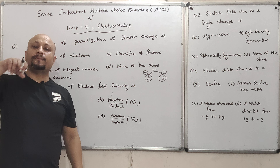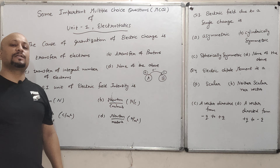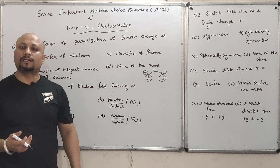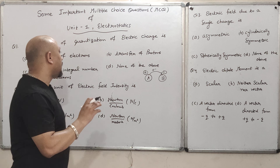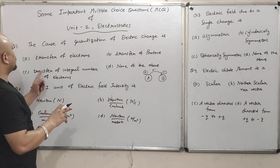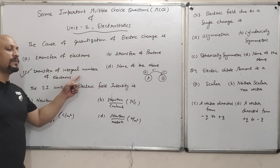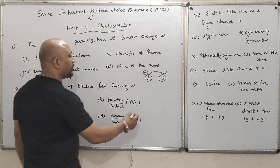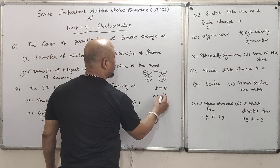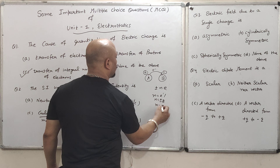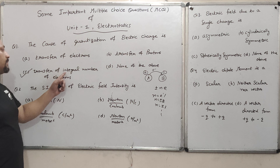Quantization says the charge will be transferred only in integral form — either 2 electrons, or 3 electrons, or 5 electrons. It will never happen that 2/3 electrons or 3/4 electrons transfer. The charge is quantized. The cause of quantization of electric charge is due to the transfer of an integral number of electrons. Electrons do transfer, but in integral form: ±ne, where n = 1, 2, 3, and so on. Answer is C — transfer of integral number of electrons.